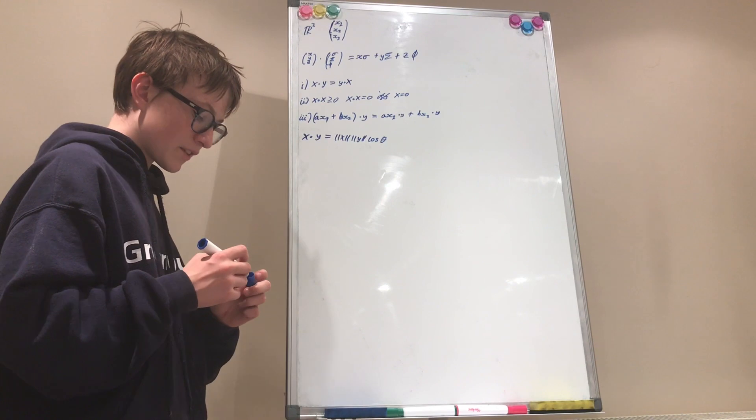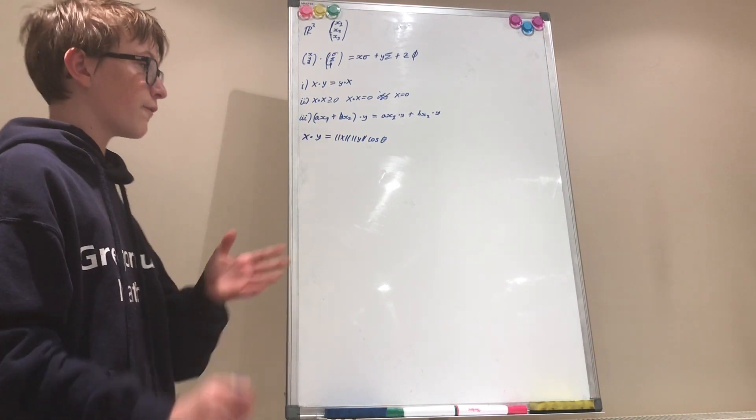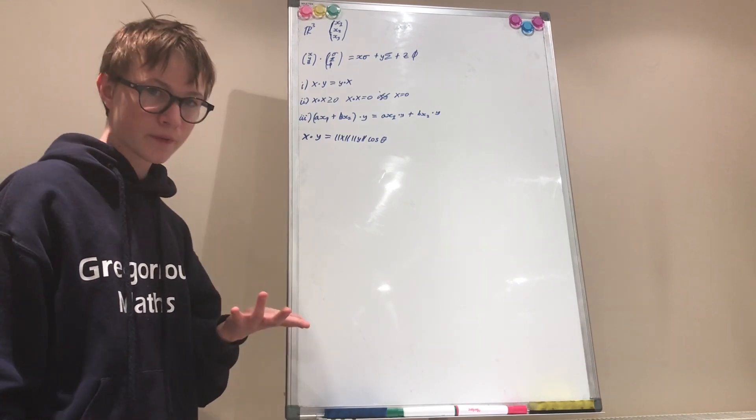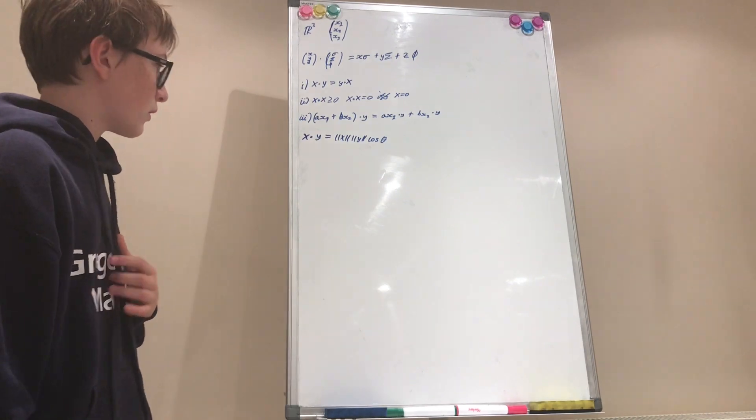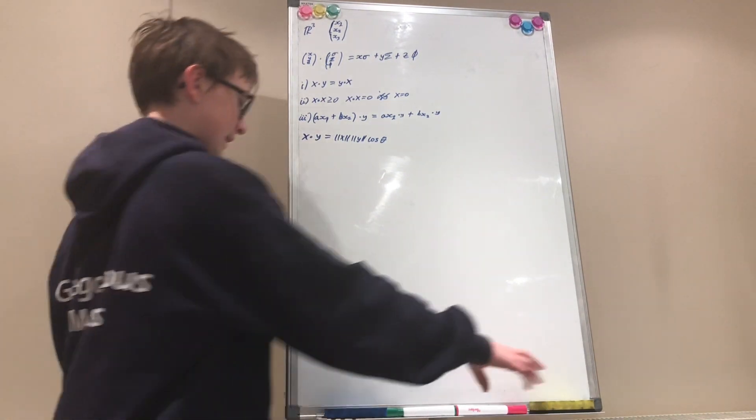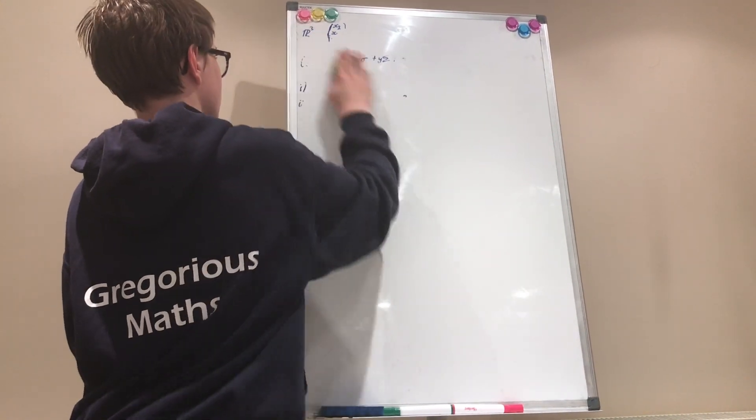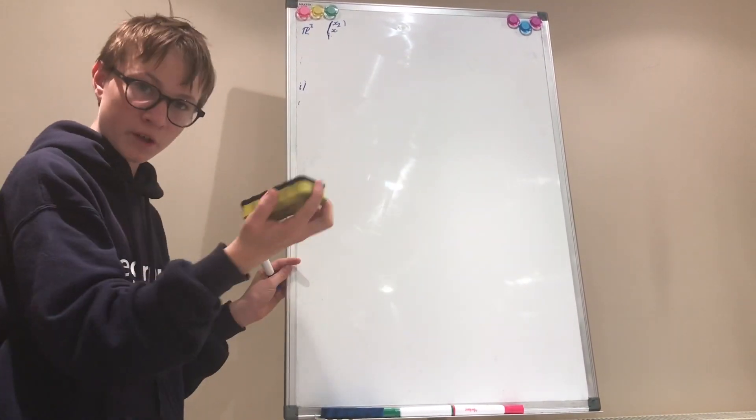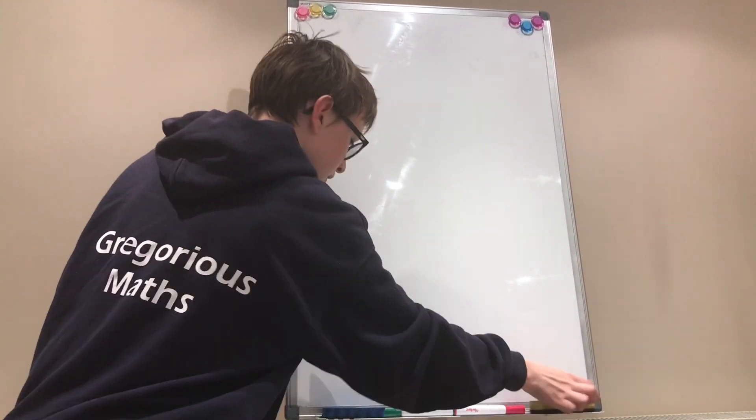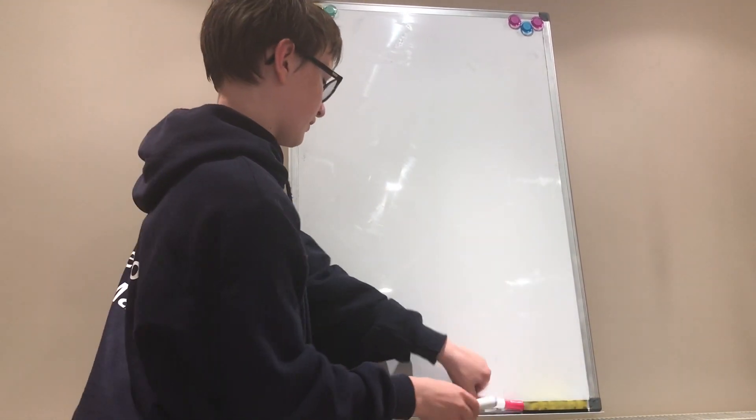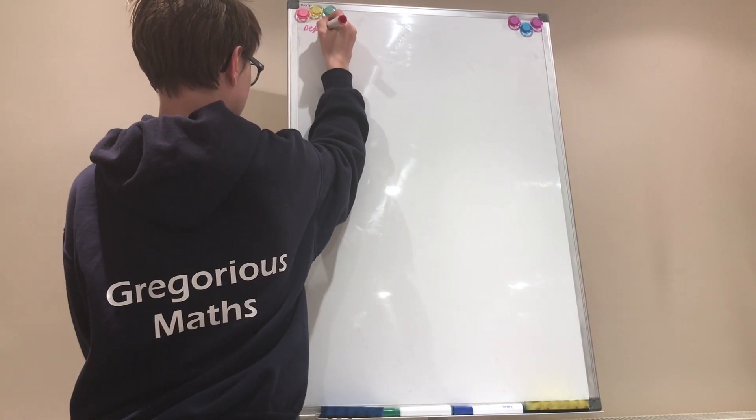But let's generalize this idea. So any finite dimensional inner product space is actually going to be a Hilbert space. Alright, so let's use this motivational example - I hope you're motivated by this example - to define a Hilbert space. What the hell is a Hilbert space? Definition.